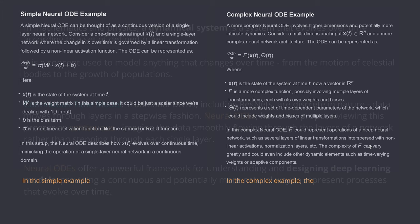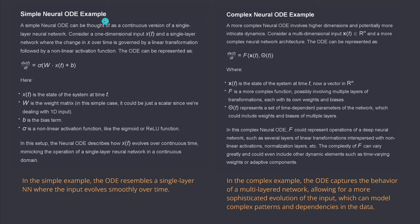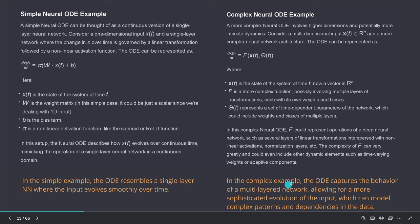For a simple neural ordinary differential equation example — we can do this in a more complex way with a free function. In the simple example, this resembles a single-layer neural network where the input evolves smoothly over time. And of course in a more complex case, it allows for sophisticated evolution of a multi-layered network, and we can model complex patterns and dependencies in the data. So this is where we had our grandfather, the neural ordinary differential equation.